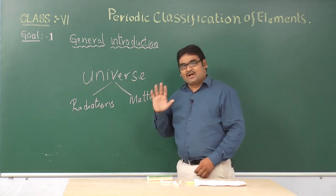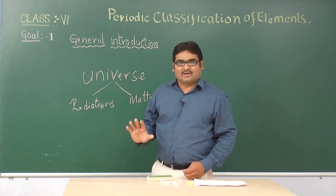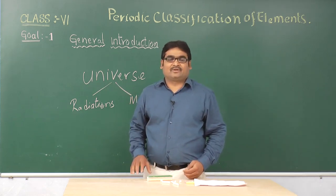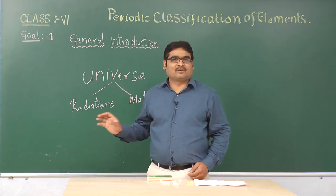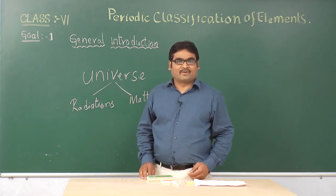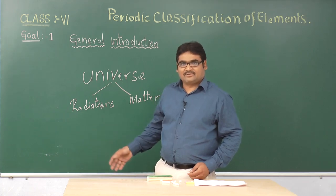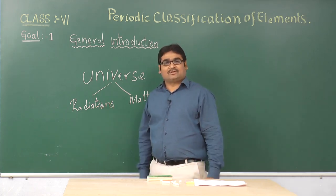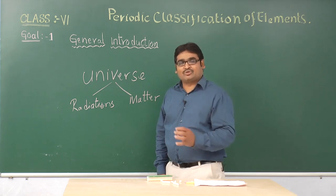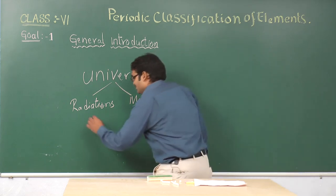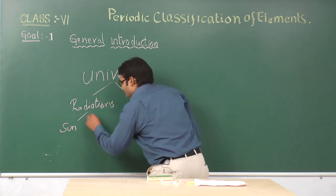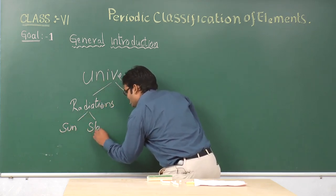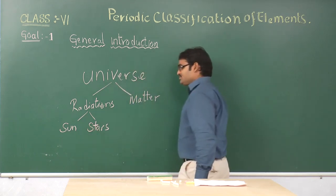What are radiations? Radiations are nothing but the light that is being emitted by the stars and the planets, stars and planets and the sun. So sun is the main source of all the light and then we have the stars here.